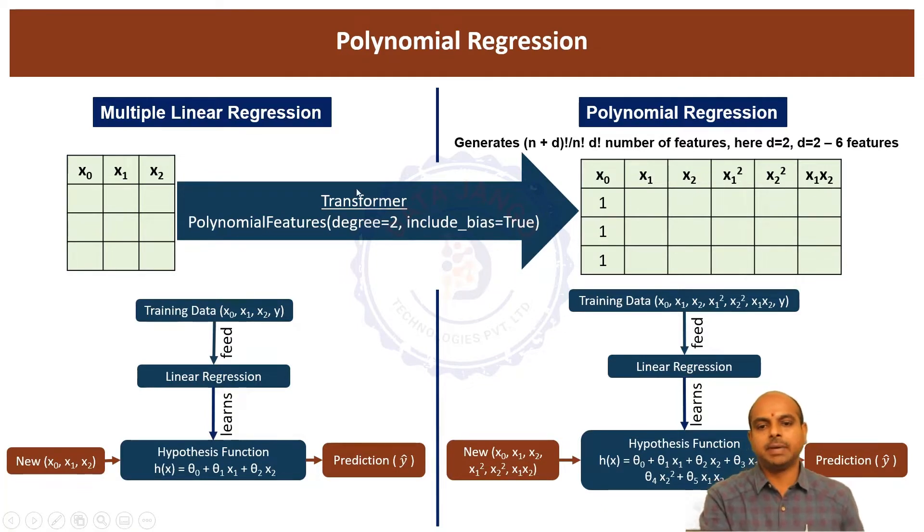This is a class which actually makes the data set a polynomial data set. When you pass a linear data set to a linear regression model, it becomes a linear regression where the hypothesis function is a linear equation: theta 0 plus theta 1 x1 plus theta 2 x2. That is a linear equation. When we added the polynomial terms x1 square, x2 square, and x1 x2, the x1 x2 is called as interaction term.